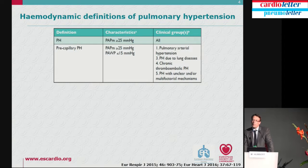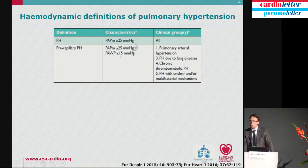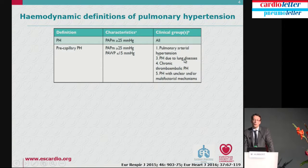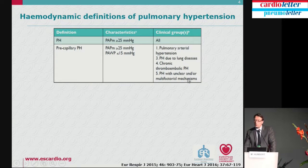When you deal with pulmonary hypertension, you deal with pre- and post-capillary pulmonary hypertension, as emphasized in all textbooks. For a wedge pressure below or equal to 15, we deal with pre-capillary pulmonary hypertension. In that category, you have PAH — formerly known as primary pulmonary hypertension — idiopathic PH, PH due to chronic lung diseases and/or hypoxia, chronic thromboembolic pulmonary hypertension, and PH with unclear or multifactorial mechanisms.